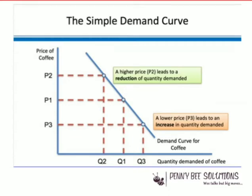When talking about demand, we also discuss complementary goods, inferior goods, normal goods, and substitute goods. We will gradually come to know about them and discuss how they have an impact on demand.